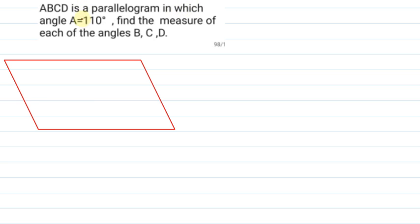Hello everyone, the question is ABCD is a parallelogram in which angle A is equal to 110 degree. Find the measure of each of angles B, C, D.